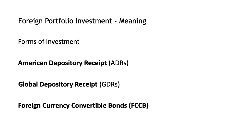Foreign Currency Convertible Bonds (FCCBs) are convertible bonds issued in a currency different from the issuer's domestic currency. The money raised by the issuing company is in the form of foreign currency. It is a mix of equity and debt investment, acting like a bond by making regular coupon and principal payments, while providing the bondholder with an option of converting the bond into stock.